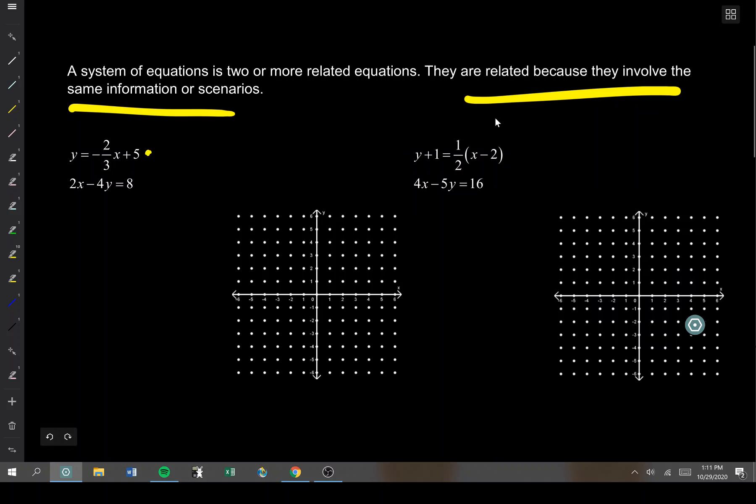I'm going to graph this line right here in yellow. This is in slope intercept form. Remember, slope intercept form is where your slope, in this case, is negative two-thirds, and your y-intercept is 5. So I'm going to start at 5 and go down 2, right 3, down 2, right 3.